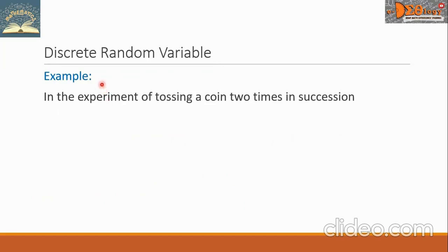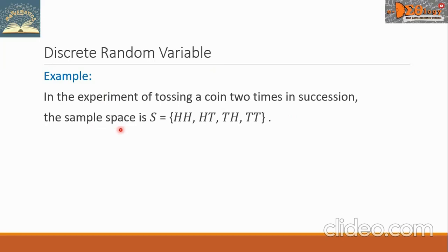Let us see this example. In the experiment of tossing a coin two times in succession, the sample space is S = {HH, HT, TH, TT}, where H is for head and T is for tail.